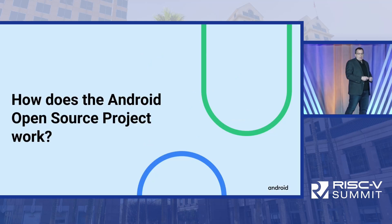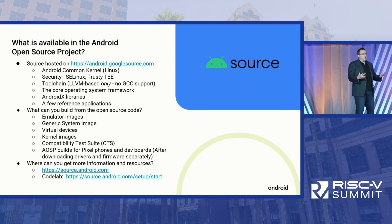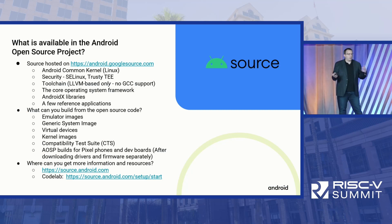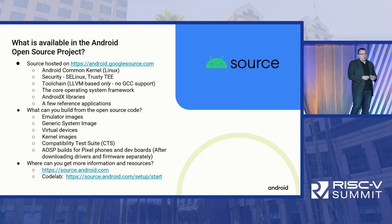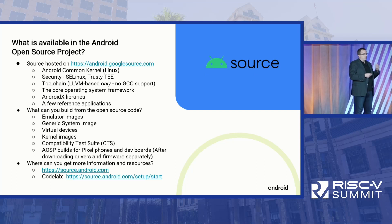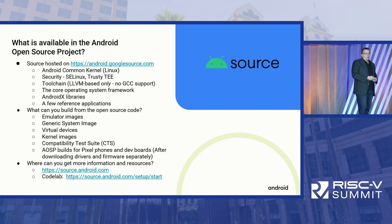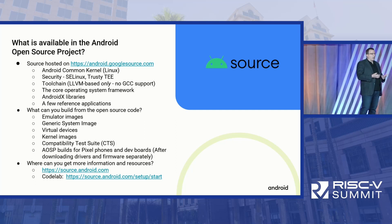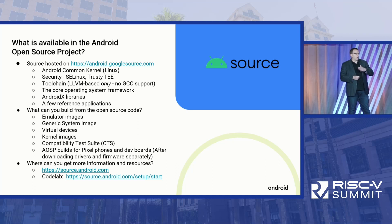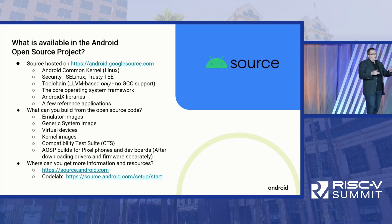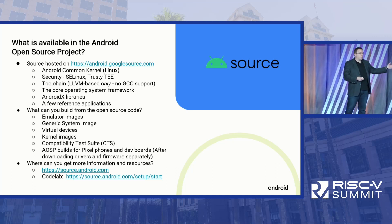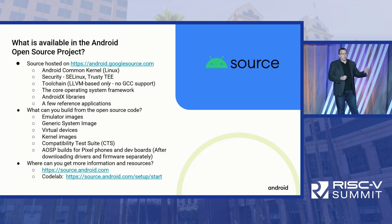When you look at the Android open source project, it has everything that you need to port the Android operating system to your platform — not just the Linux kernel, but also all of the security layers, all of the security privileges, the trusted execution environment, all of the cross-compilers so that you can do all of your work on the Linux host but target whatever particular device you have. There's a core operating system framework that provides the set of APIs that developers will build against, but there's also a set of libraries that allow developers to target a wide range of applications so that one developer can target the newest version of Android but still have their application run across a lot of different devices, including much older ones.